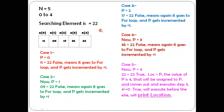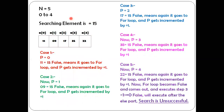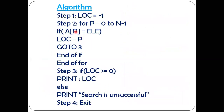Now let's take the same array but change the searching element to 15. Again n equals five, indices zero to four. Note that 15 is not present in this array at all, so we need to display an appropriate message: search is unsuccessful. Step one: location is initialized to minus one. Step two: for p equals zero to four.